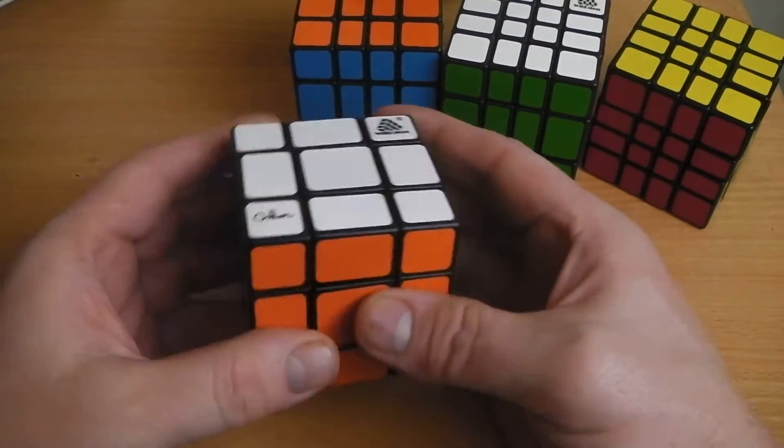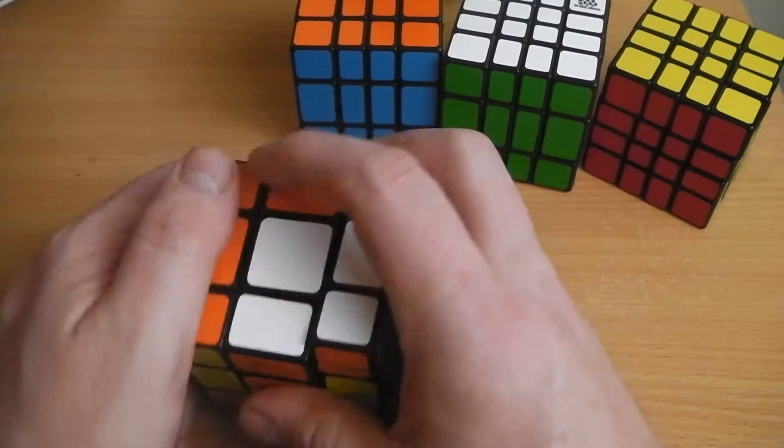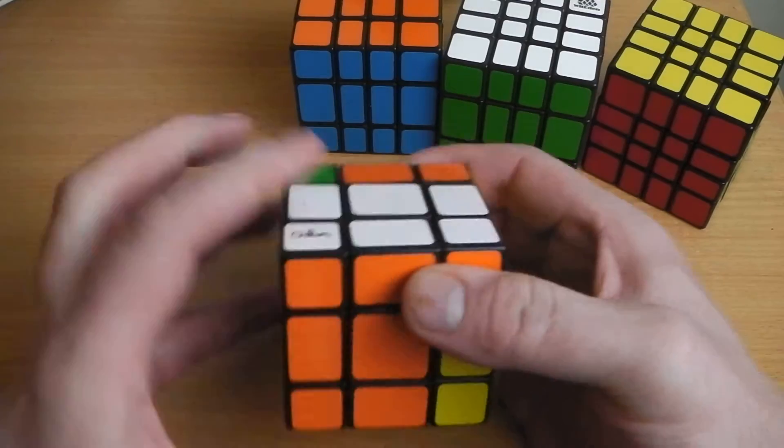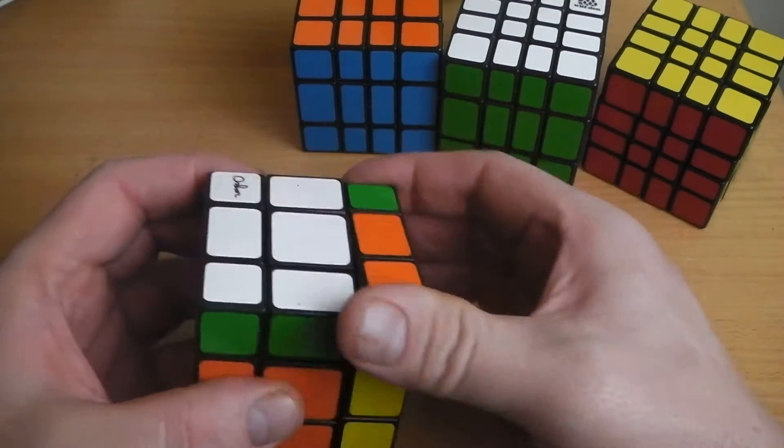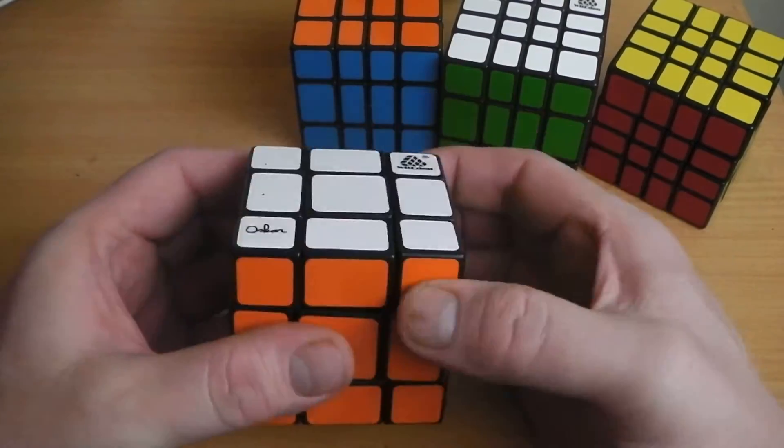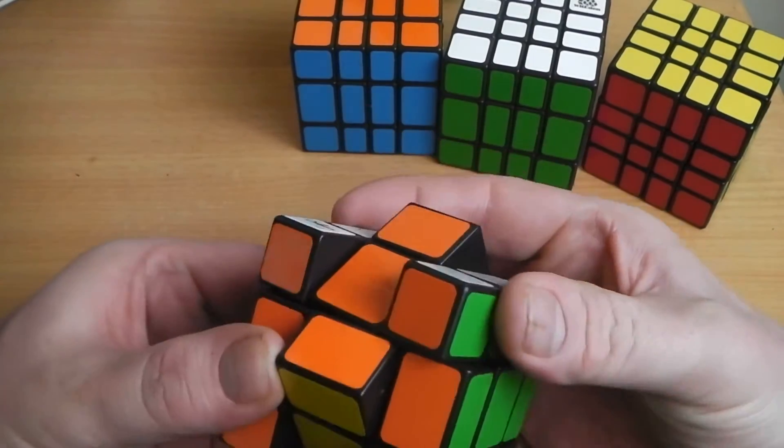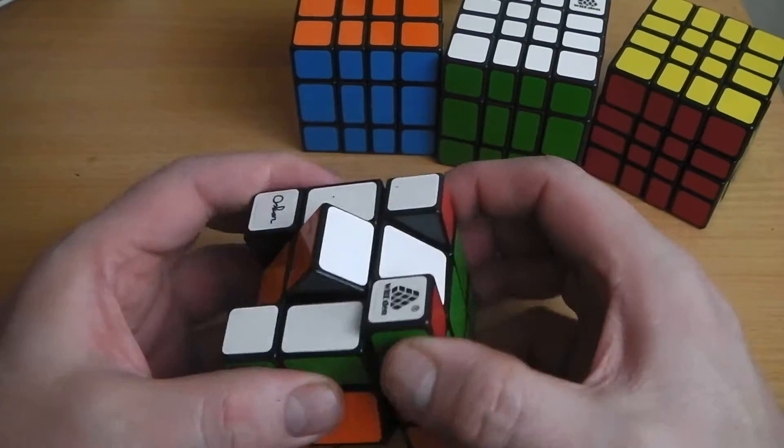So this is the 3x3 version. It turns much like a regular 3x3 cube. This is no speed cube. You're not going to be able to solve this as you would a speed cube. That's because of the complex interior mechanism, which allows things like this. So you can turn the center layer 45 degrees and make other turns like that.